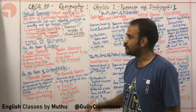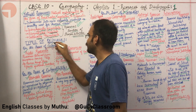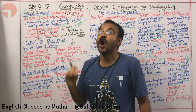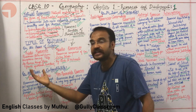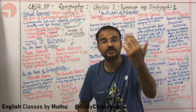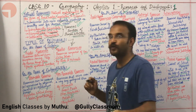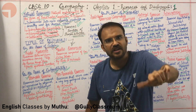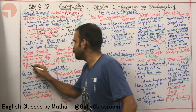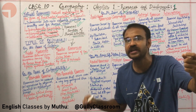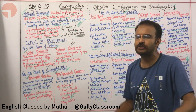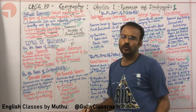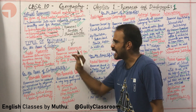Natural resources can be classified on different bases. On the basis of origin, resources can be classified as biotic or abiotic. Biotic resources are obtained from living things like flora and fauna — flora means plant resources, fauna means animal resources — along with fisheries, human beings, and livestock. Abiotic resources are non-living things like rocks and minerals. Iron ore is a good example of an abiotic resource.